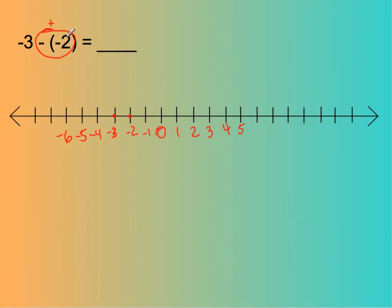So we're going to the right for 2. Start at negative 3 and go to the right 2: 1, 2. If the problem told me to go to the right for 3, I'd end up at 0. But it told me to go to the right for 2, so I'm still in negative territory, and the answer is negative 1.